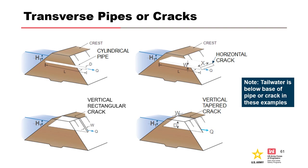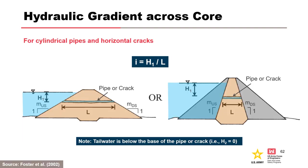Example transverse flaw geometries for which hydraulic shear stress will be estimated include a cylindrical pipe, a horizontal crack, a vertical rectangular crack, and a vertical tapered crack. For the case of tailwater below the base of a cylindrical pipe or horizontal crack, the hydraulic gradient is estimated by dividing the hydraulic head difference by the length of the leakage pathway through the core. For a homogeneous cohesive embankment, the upstream and downstream face slopes are used to estimate the length. For a zoned embankment where outer zones are very permeable, the slopes of the upstream and downstream central core faces are used.